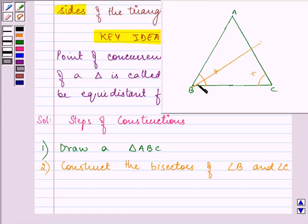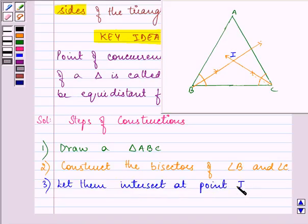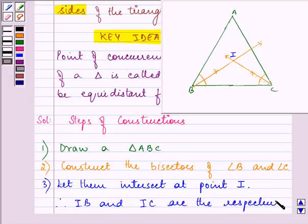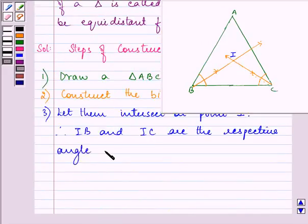Similarly, I am making these arc diagrams to make your understanding clearer. Let them intersect at point I. Therefore, IB and IC are the respective angle bisectors of angles B and C.